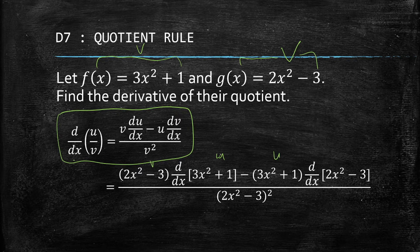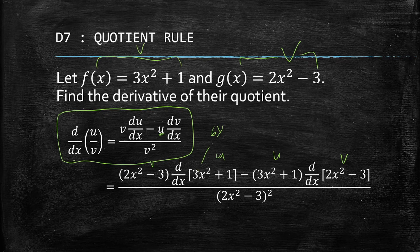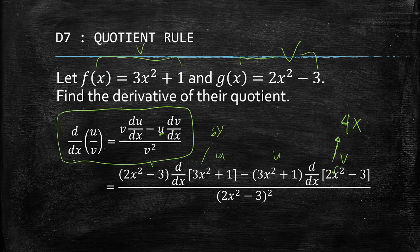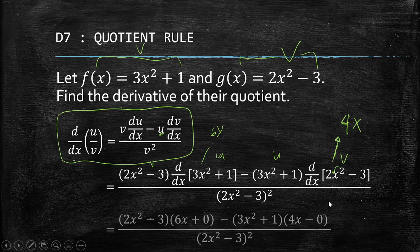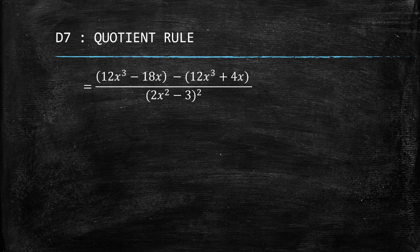Applying the formula: v du is (2x squared minus 3) times the derivative of u, minus u dv, which is (3x squared plus 1) times the derivative of v, all over v squared. The derivative of u: bringing down 2 gives 6x, and the derivative of 1 is 0. The derivative of v: bringing down 2 gives 4x, and the derivative of minus 3 is 0. So we get 12x cubed minus 18x minus the group (12x cubed plus 4x), all over (2x squared minus 3) squared.